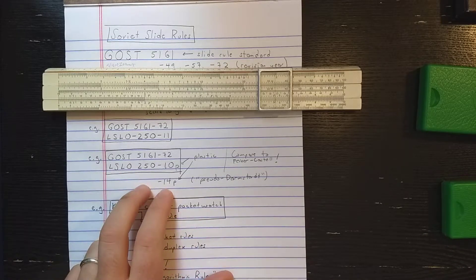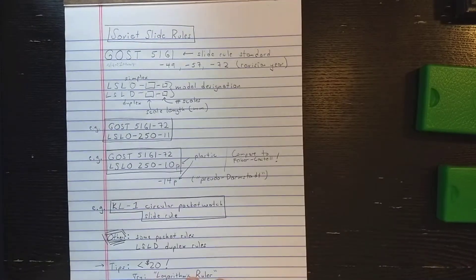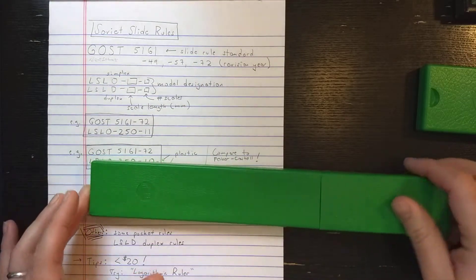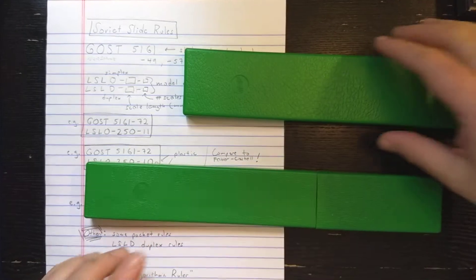I have two slide rules here which are plastic. Let's look first at this one, the LSLO 250-10P. These plastic ones, I think, are all made in this factory. That mark, I think, is a factory.